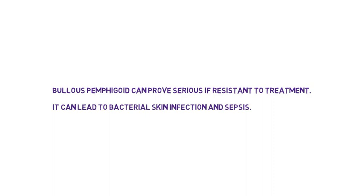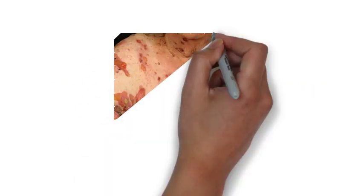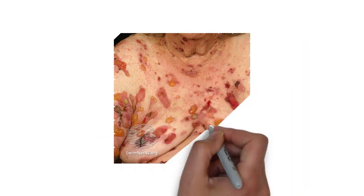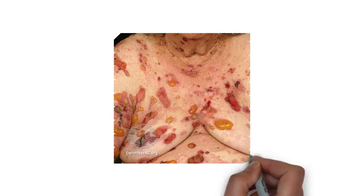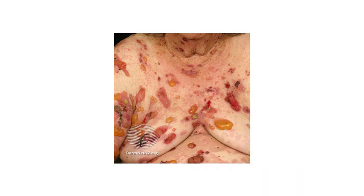It is typically diagnosed by a skin biopsy, which will show evidence of sub-epidermal blisters. Another differentiating factor between Bullous Pemphigoid and Pemphigus vulgaris is that in Bullous Pemphigoid, there tends to be no oral involvement, whereas this is not the case in Pemphigus vulgaris.